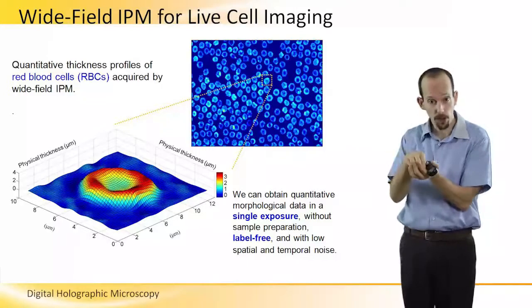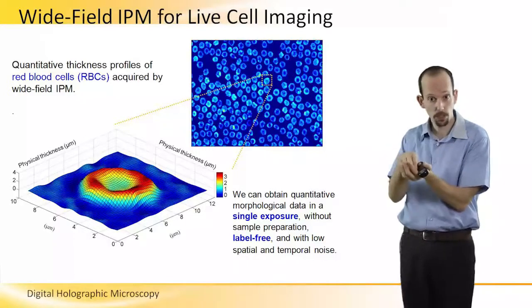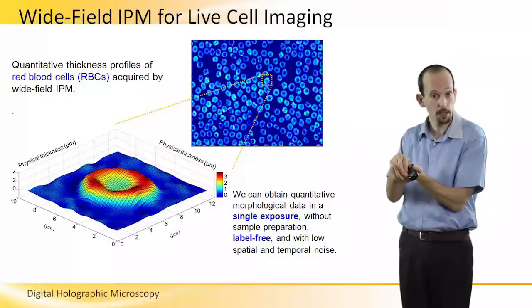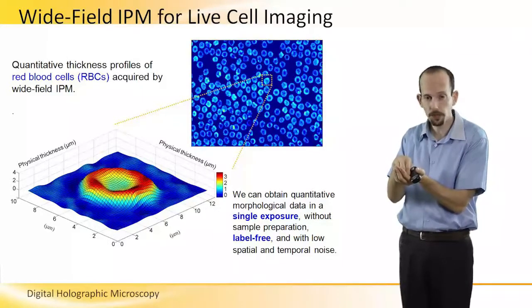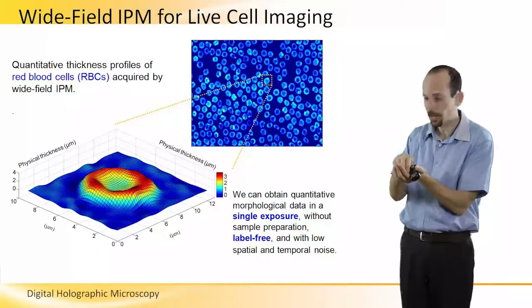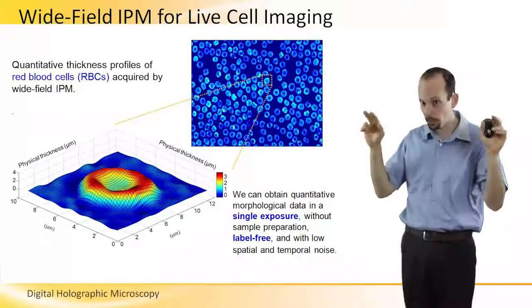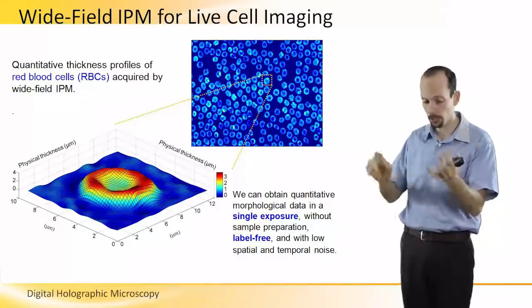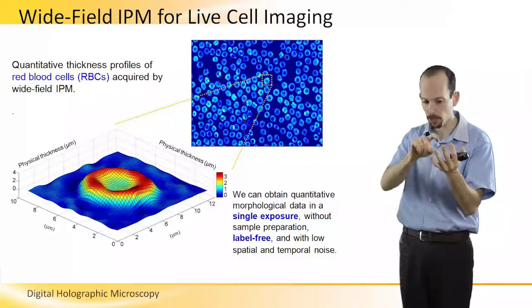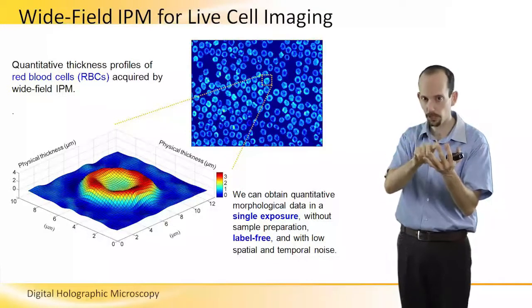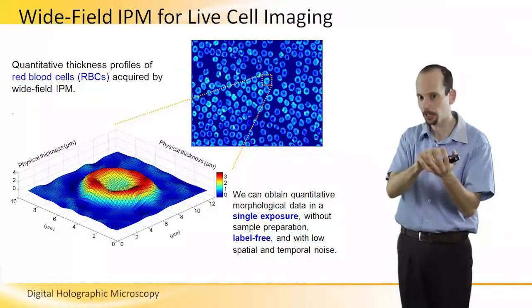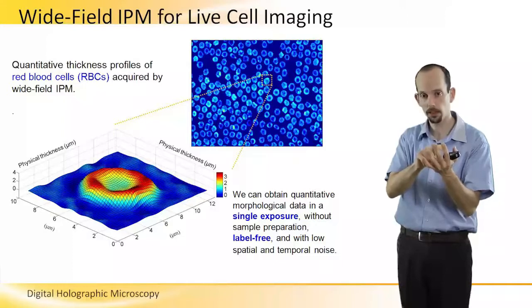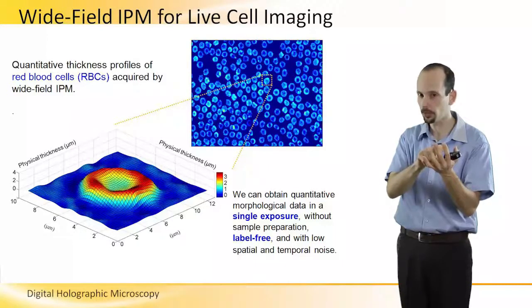So, the phase information which is recorded, the phase profile is actually proportional to the physical thickness of the cell. So, I can actually get a 3D image. It's not real 3D, it's not x, y, and z. It's x, y, and physical thickness in this case, and optical thickness, if the cells have different organelles with different refractive index.